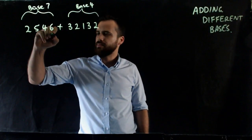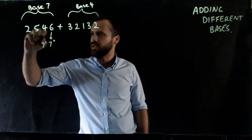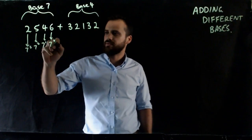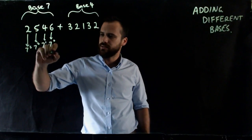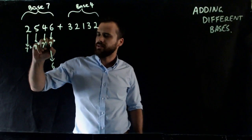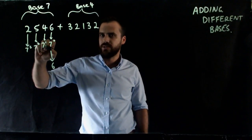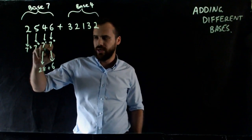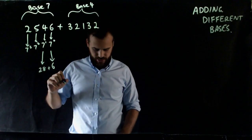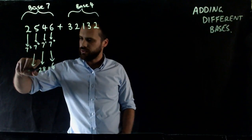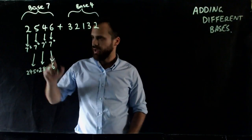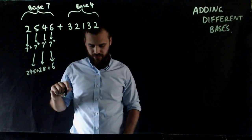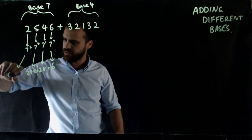So base 7. Now remember that each of these columns represents 7 to the 0, 7 to the 1, 7 to the 2, and 7 to the 3. Now 7 to the 0 is 1, so there's 6 ones — that's 6. Now 7 to the 1 is 7, so there's 4 sevens, that's 28. Now 5 times 7 squared — 7 squared is 49, so 5 times 49 equals 245. And then 7 cubed is 343, so 2 times 343 is 686.